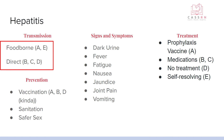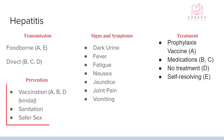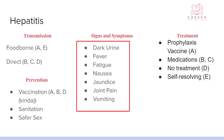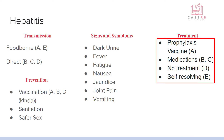Hepatitis A and E are both foodborne, while B, C, and D are direct contact. There are vaccinations for A and B, which all of us would have had to get before going to nursing school. D is very connected to hepatitis B, so if you get the hepatitis B vaccine, you're not likely to get hepatitis D. Sanitation and safer sex are also important since B, C, and D can be transmitted that way. Hepatitis affects your liver, so you'll see dark urine, fever, fatigue, nausea, jaundice, joint pain, and vomiting. Treatment includes a prophylactic vaccine and medications for B and C, but D has no treatment and E usually self-resolves.